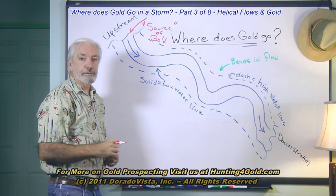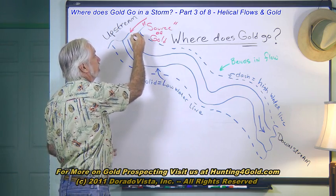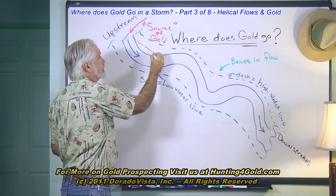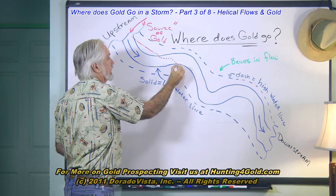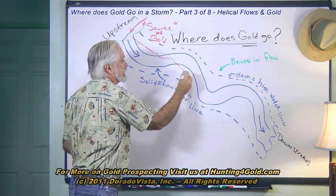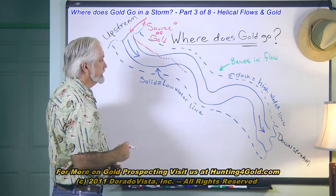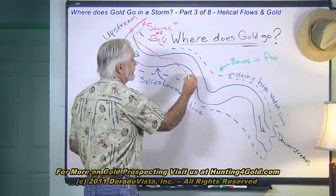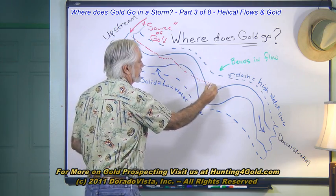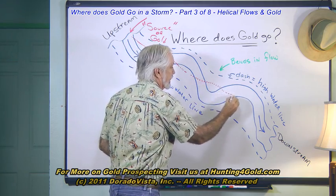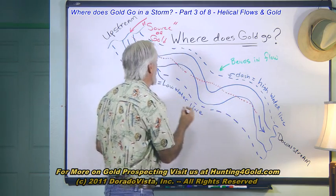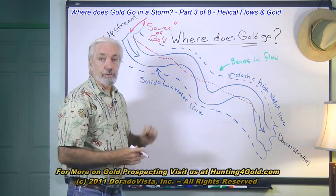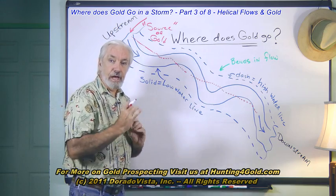The gold enters the stream upstream somewhere. As it enters, the water begins to interact, and the gold starts following a trail that pretty much slices across these points. The reason why it slices across the points and crosses the middle of the stream in between is quite simple — there's some action going on in how the water flows that causes the gold to be swept into a nice streak.